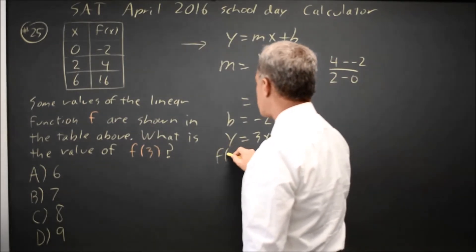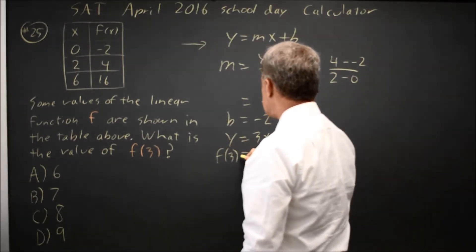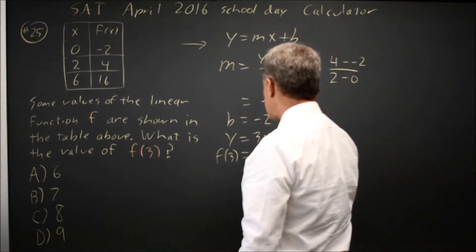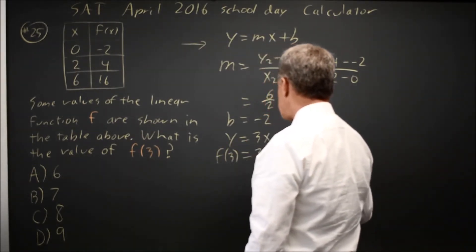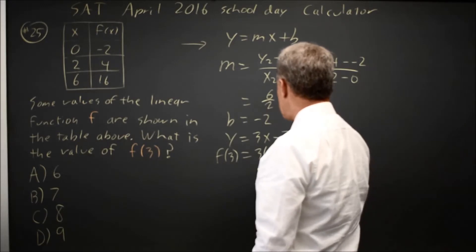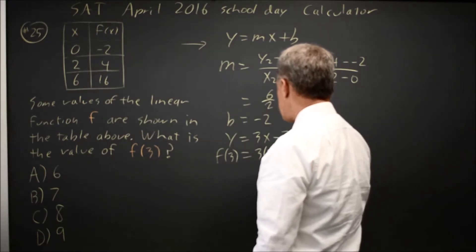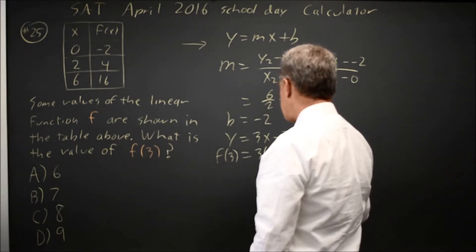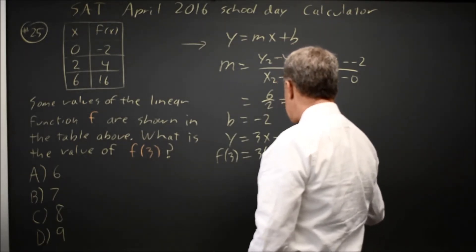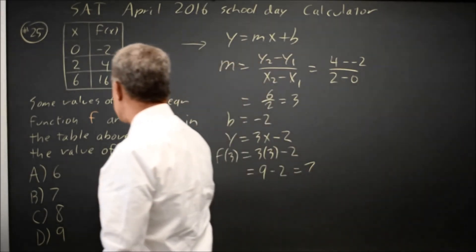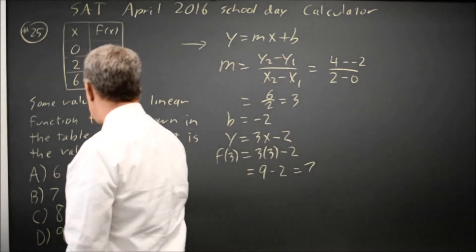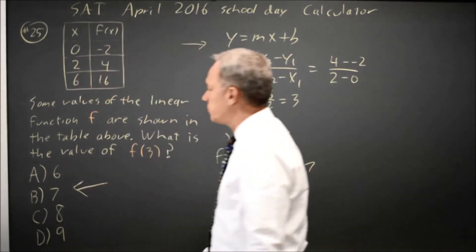So f of 3: 3 times whatever is in the parentheses, then minus 2. 3 times 3 is 9, and 9 minus 2 equals 7. So f of 3 equals 7. That would be choice B.